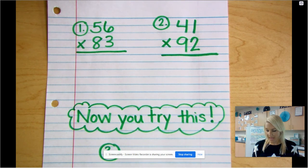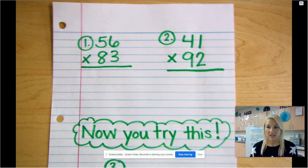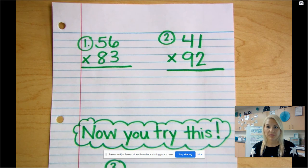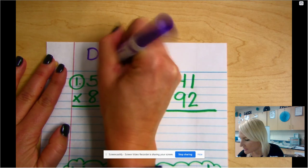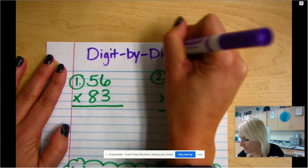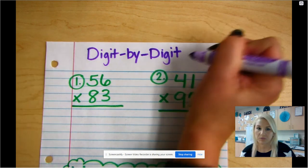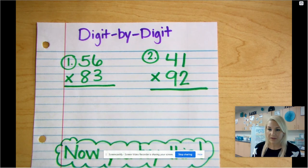So I'm gonna go ahead and start showing you the steps for solving a two by two digit. What's different this time is we're gonna do something called dropping a zero with the digit-by-digit method. So we still are using the digit-by-digit method, which is what we call the shortcut method.